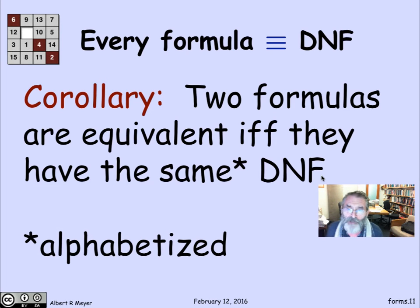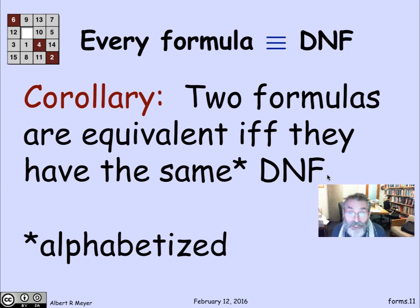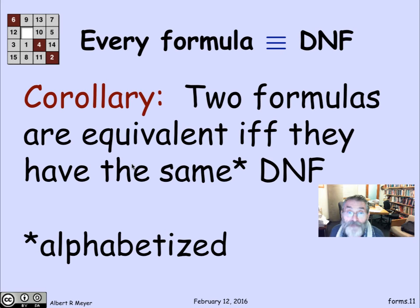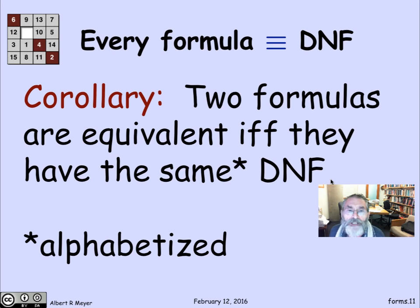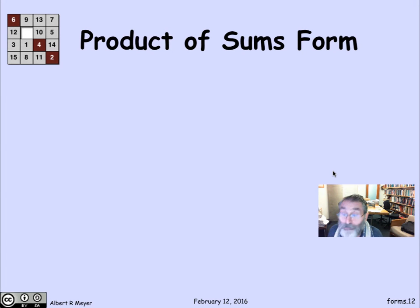There's a small quibble here, because the disjunctive normal form doesn't specify the order in which the sums occur, or within each product the order in which the variables occur. So let's invent a convention of alphabetizing all these things so that there's only one alphabetized disjunctive normal form per formula. Then two formulas are equivalent if and only if they have the same alphabetized DNF. This will give us in the next video a strategy for calculating whether two formulas are equivalent by algebraic manipulation.